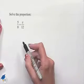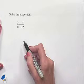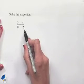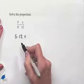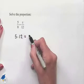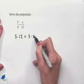In order to solve this, we can use the cross products principle, where we multiply across the proportion. That would give us 5 times 12, and that's going to equal 8 times x.